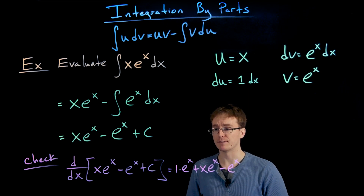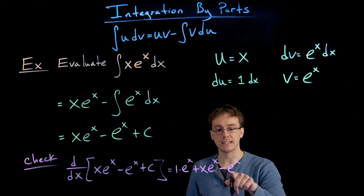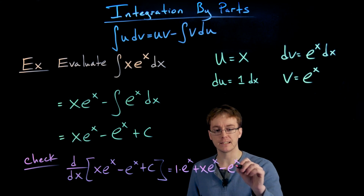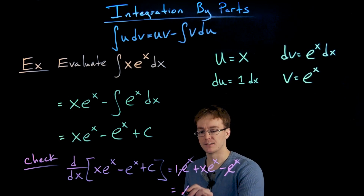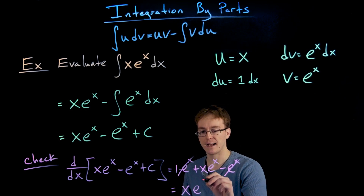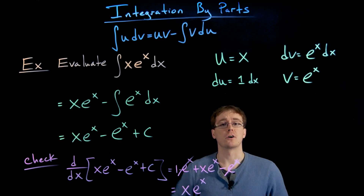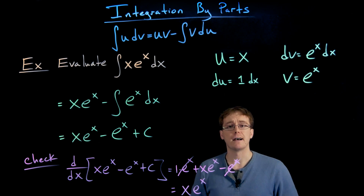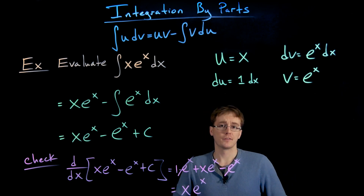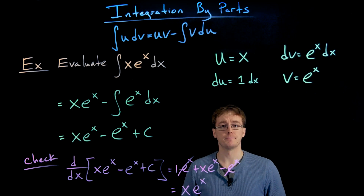What do we have left? 1 times e to the x, plus x times e to the x, minus e to the x. The positive and negative e to the x terms cancel each other out, and we end up back at x times e to the x — right where we started. This verifies we have the correct antiderivative from our integration by parts formula.